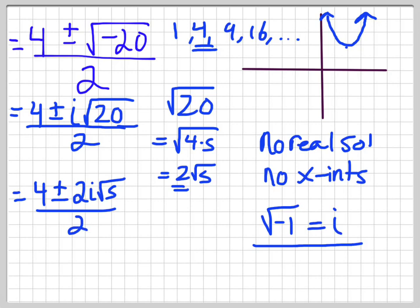Then I can reduce this down because the top two numbers are both divisible by 2, so it becomes 2 plus or minus, and 2i divided by 2 is just i root 5. So that's what I do. So if I get a negative underneath the root sign, I change it to an i, and that's it.